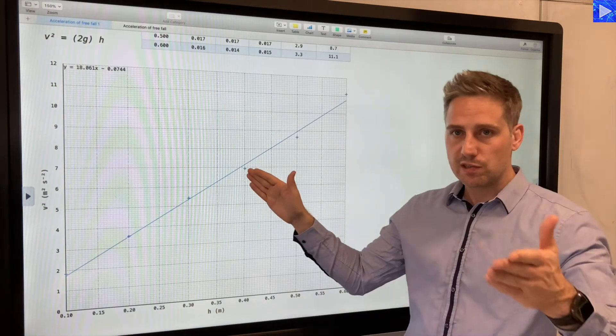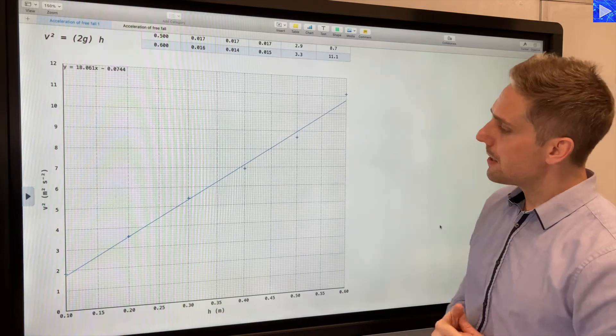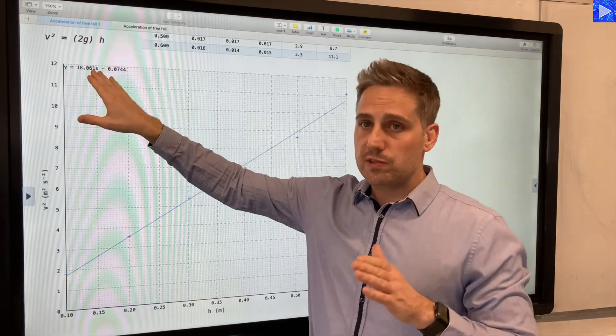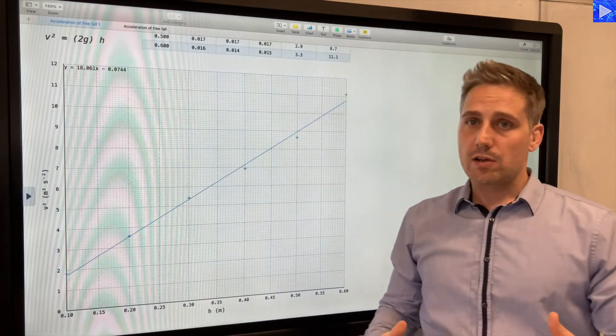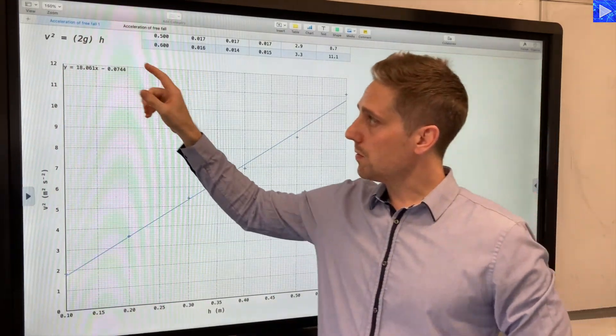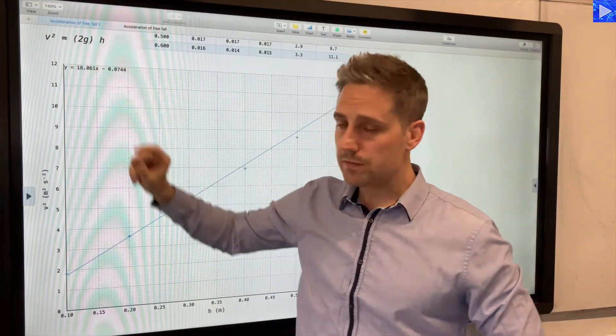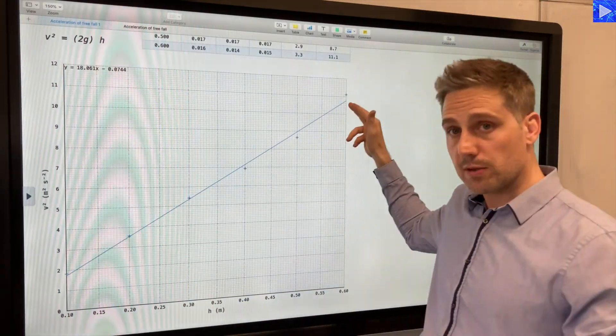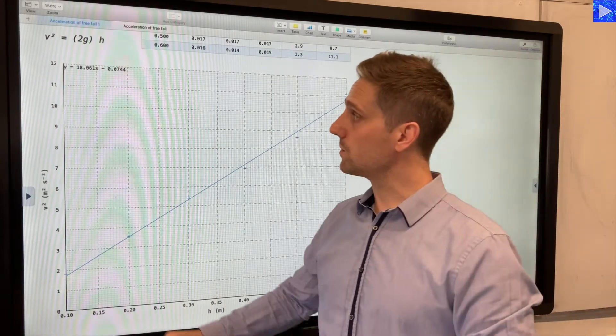Because we are expecting a straight line relationship. Well, I haven't done that, but it's good to bear that in mind for the future. It's not too bad. So what we're going to do now is we're going to take the gradient. We're going to analyze it according to comparing our equation v² = 2gh with that of the equation of a straight line, y = mx + c.